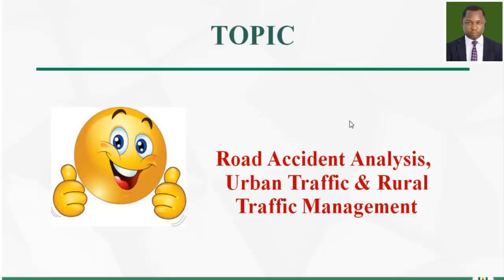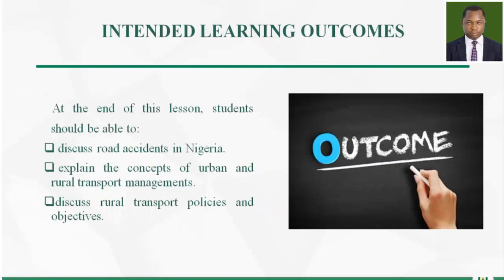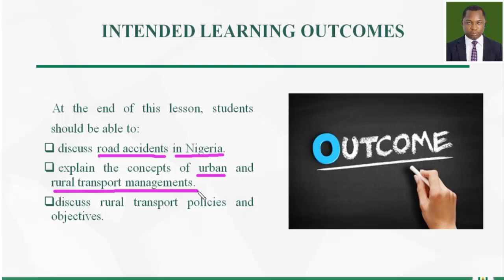Without a waste of time, let me quickly take you through the intended learning outcomes for this lesson — what you will stand to benefit at the end. At the end of this lesson, you should be able to discuss road accidents in Nigeria, explain the road accident scenario in Nigeria, explain the concept of urban and rural transport management in terms of their traffic perspective, and discuss rural transport policies and their objectives.